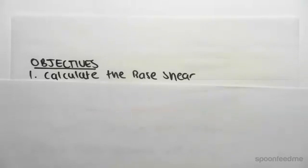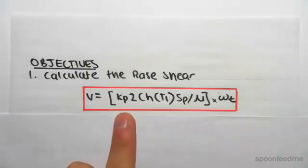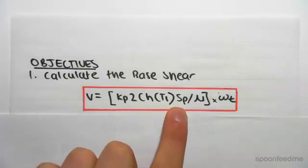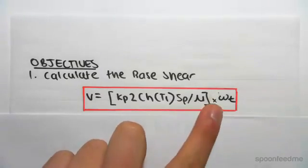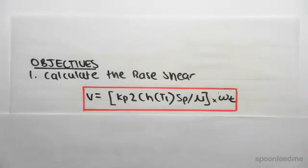Hey guys, the objective of this video is to calculate the base shear. The formula for base shear looks like this: V equals kpz ch of T1 times Sp on mu times Wt. We're going to find all these values in this video and then work out the base shear.